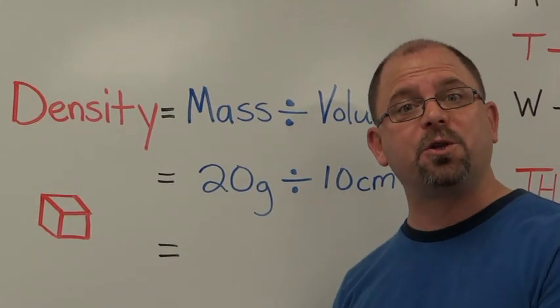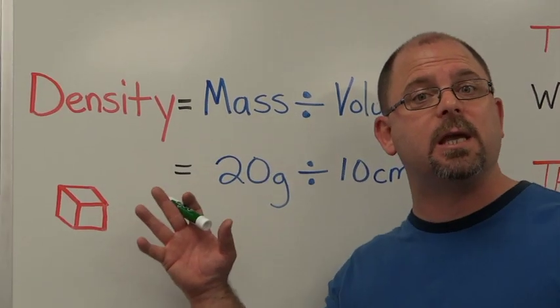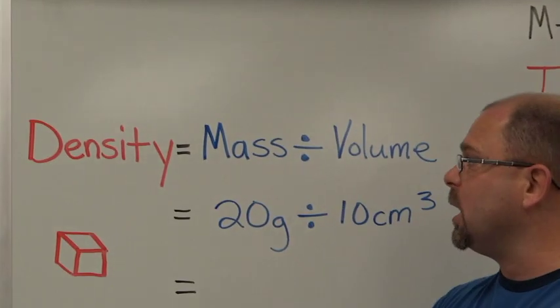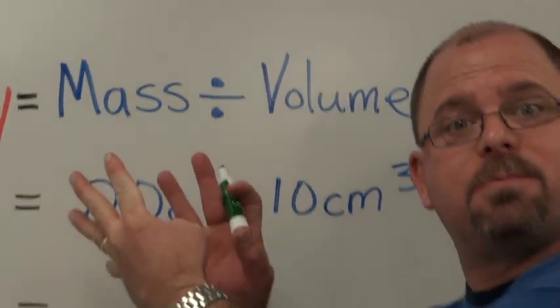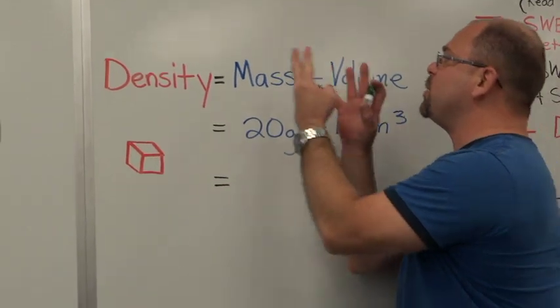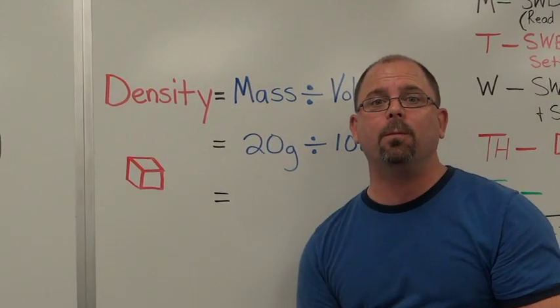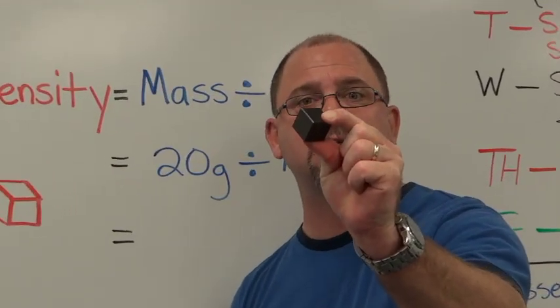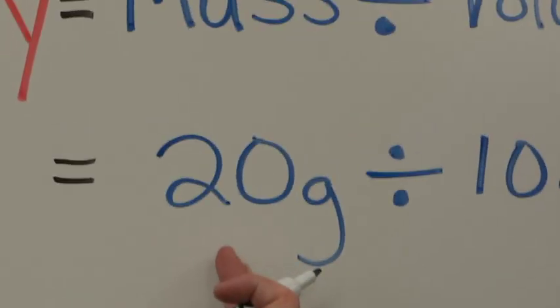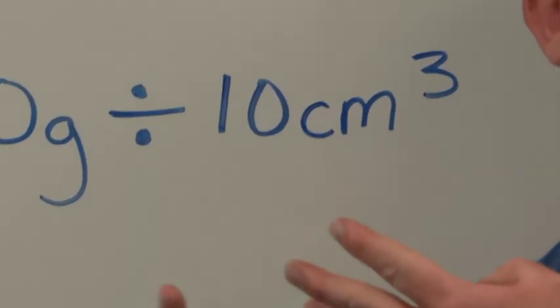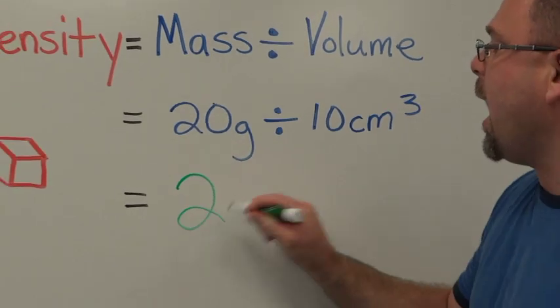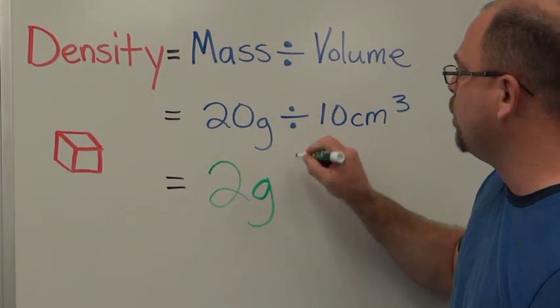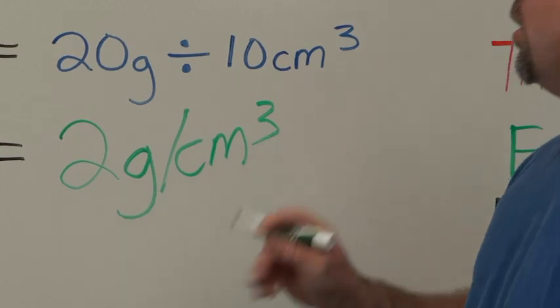One thing students need to know before doing this lab is that you can calculate density using a mathematical formula. The formula is density equals mass divided by volume. If you know the mass of an object and you know its volume, all you have to do is mass divided by volume. For example, if the mass of a density cube is 20 grams and its volume is 10 cubic centimeters, that would be 20 divided by 10, which is 2. The unit we use is grams per cubic centimeter.